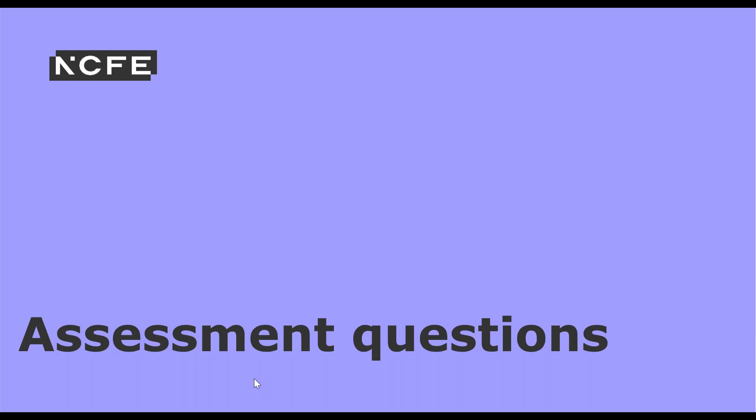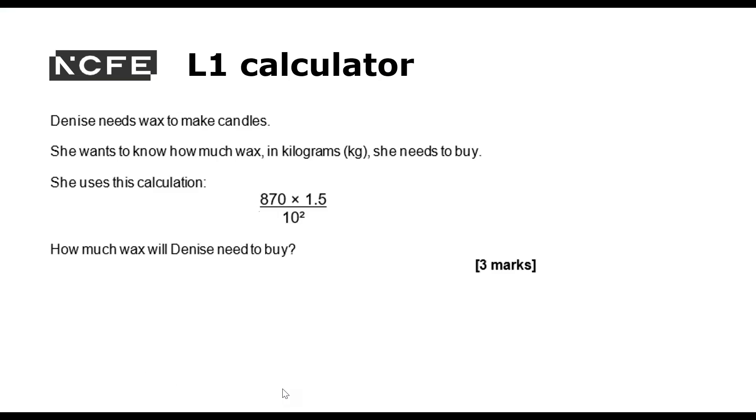We're going to take a look at some assessment questions now. Denise needs wax to make candles. She wants to know how much wax in kilograms she needs to buy. She uses this calculation. How much wax will Denise need to buy? We need to follow BIDMAS. So the first thing we need to do is look at the indices. So we've got 870 times 1.5 all over 100. It's a nice straightforward one because 10 times 10 is 100. Now we need to do that division.